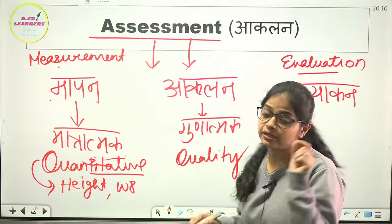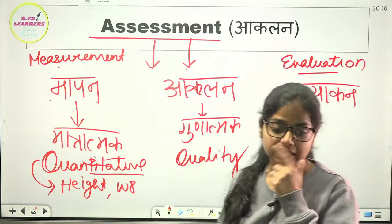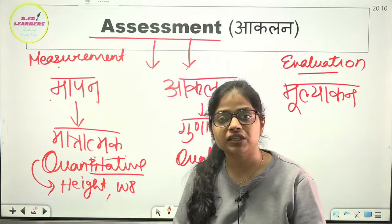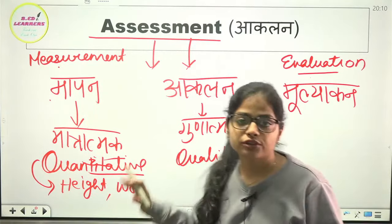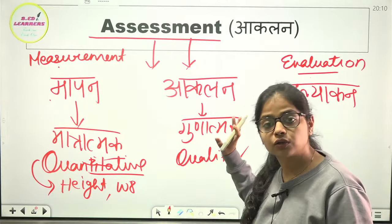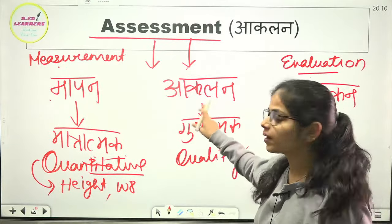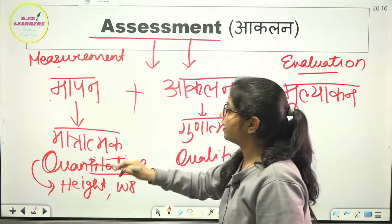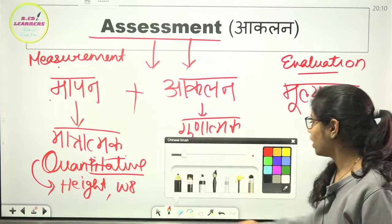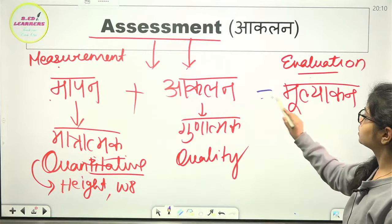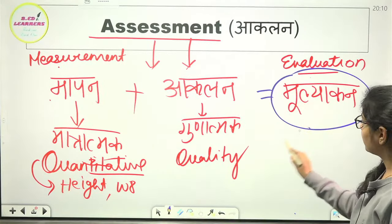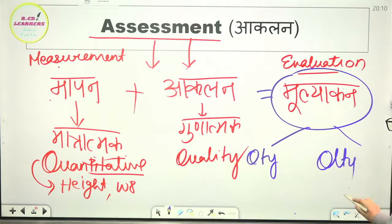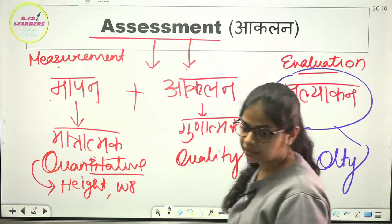Aaklan is qualitative — it tells us about quality. For example, looking at a child's behavior — how is the child's behavior, how is the child communicating — we judge the quality inside the child. This is not quantitative. And when we combine both Maapan and Aaklan together, we get Muliankan, which tells us both the quantity and the quality of the child.